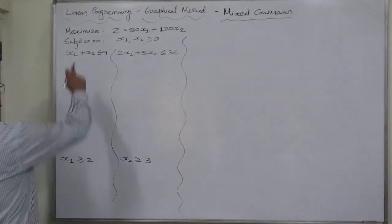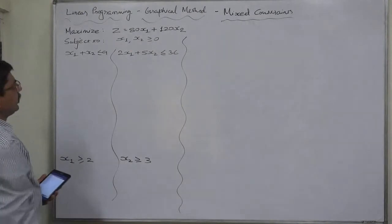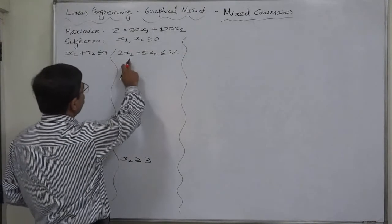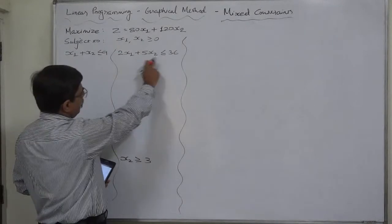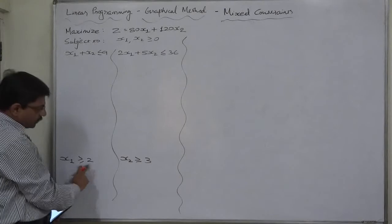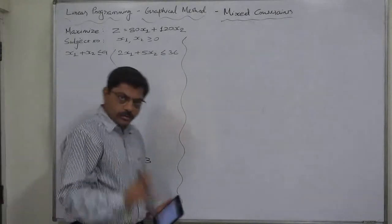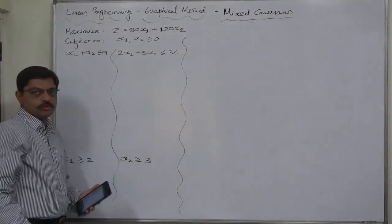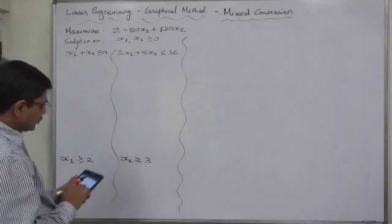Let's start. Maximize z equals to 80x1 plus 120x2 subject to x1 plus x2 less than or equal to 9, 2x1 plus 5x2 less than or equal to 36, x1 greater than or equal to 2, x2 greater than or equal to 3, and as usual x1 and x2 both are non-negative.